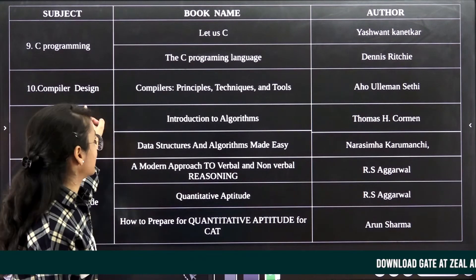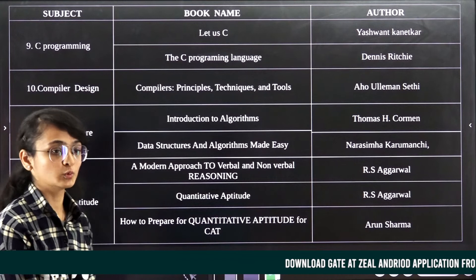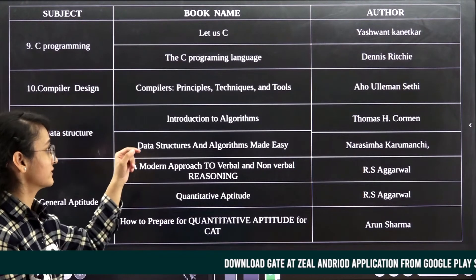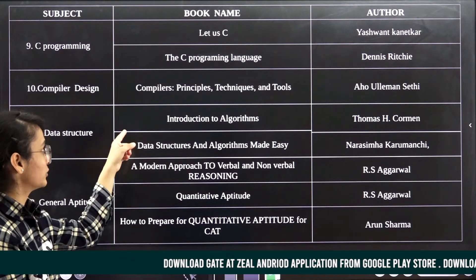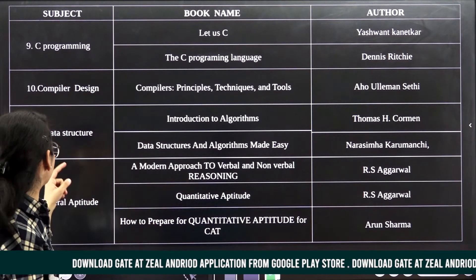The next subject is C Programming. For C Programming, I typically follow two books. First one is Let Us C by Yashwant Kanetkar, and The C Programming Language by Dennis Ritchie.